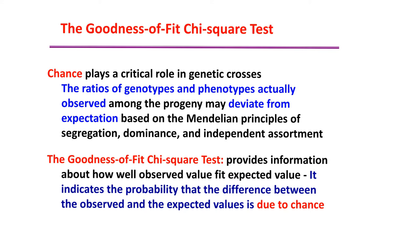The key question is: was it only chance that produces the difference between observed and expected results, or is there something else? Certain genes' expression might be affected by other genes, or the environment might play a role. To answer this — specifically, what is the probability that the difference between observed and expected results is due to chance — you must perform a chi-square test.